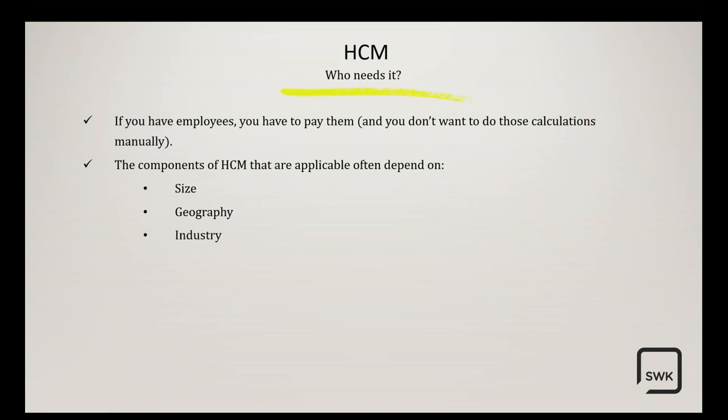Industry is a big driver for us. A lot of the companies we work with, given our background and our large group of Sage 100 customers, are manufacturing and distribution. We find our manufacturers are often doing some sense of costing, where employees capture time not only for job purposes but also for payroll purposes. We also work with a lot of service-based companies where learning management and performance management tend to be a bit more important, and with organizations that have high turnover — a quick-service restaurant we're working with today where onboarding and work opportunity tax credit are huge opportunities to save time and money.